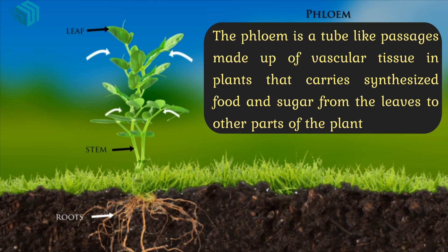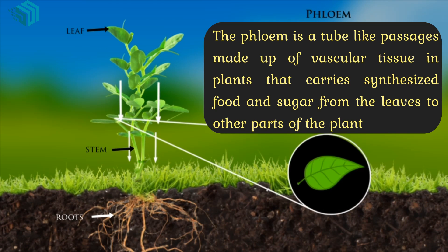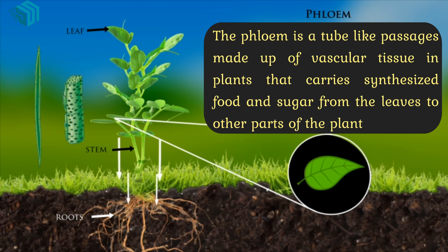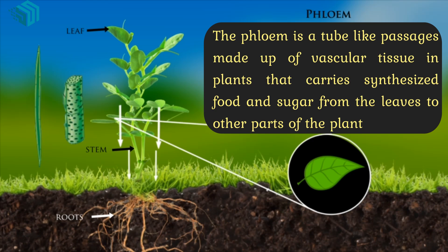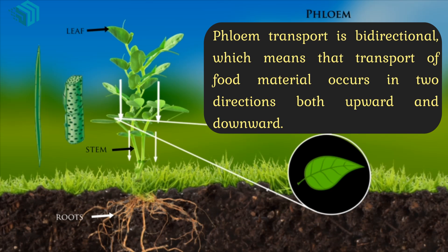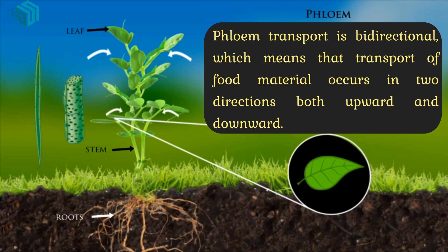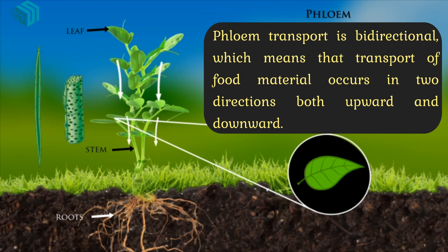The phloem is a tube-like passage made up of vascular tissues in plants that carries synthesized food and sugar from the leaves to other parts of the plant. Phloem transport is bi-directional, which means the transport of food materials occurs in two directions — both upwards and downwards.